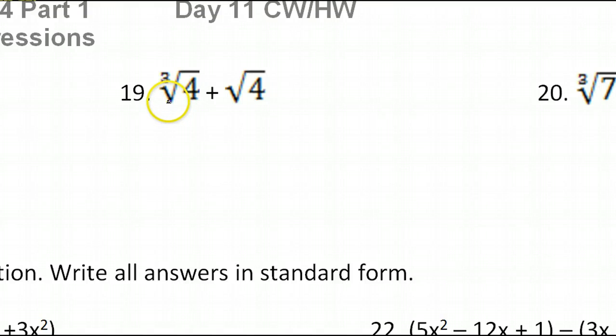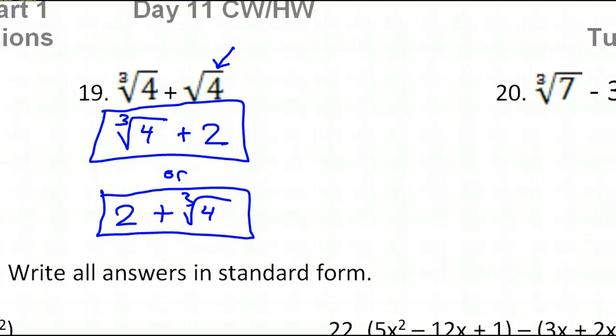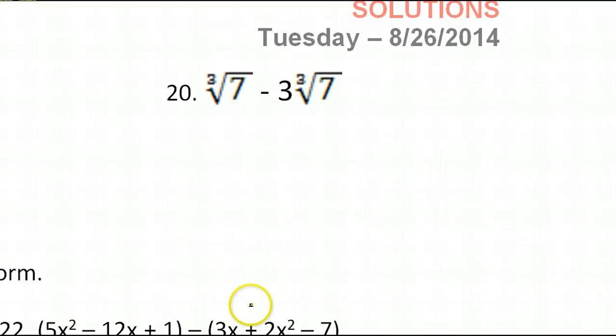Now number 19. First of all, I can't add these. They are not like terms. This is the cube root and this is the square root, so I can't add them. What I can do is this is a perfect square, so I can go ahead and just make that a 2. So this is going to be the cube root of 4 plus 2. Or you could have 2 plus the cube root of 4 is more common. But that's all you can do with number 19. I thought about it, nothing else you can do with that.